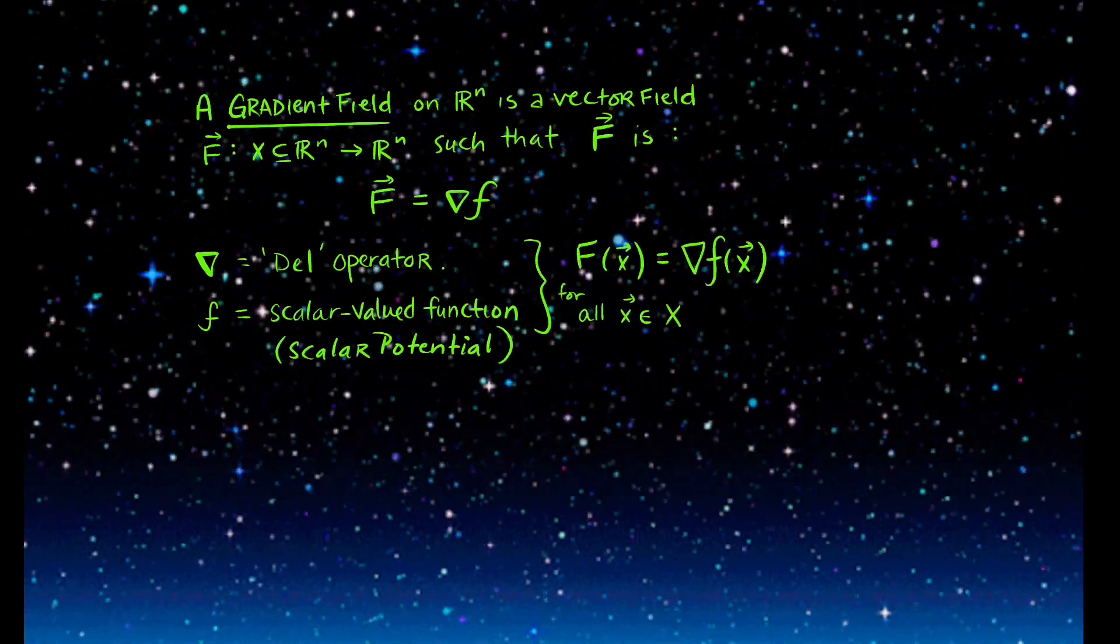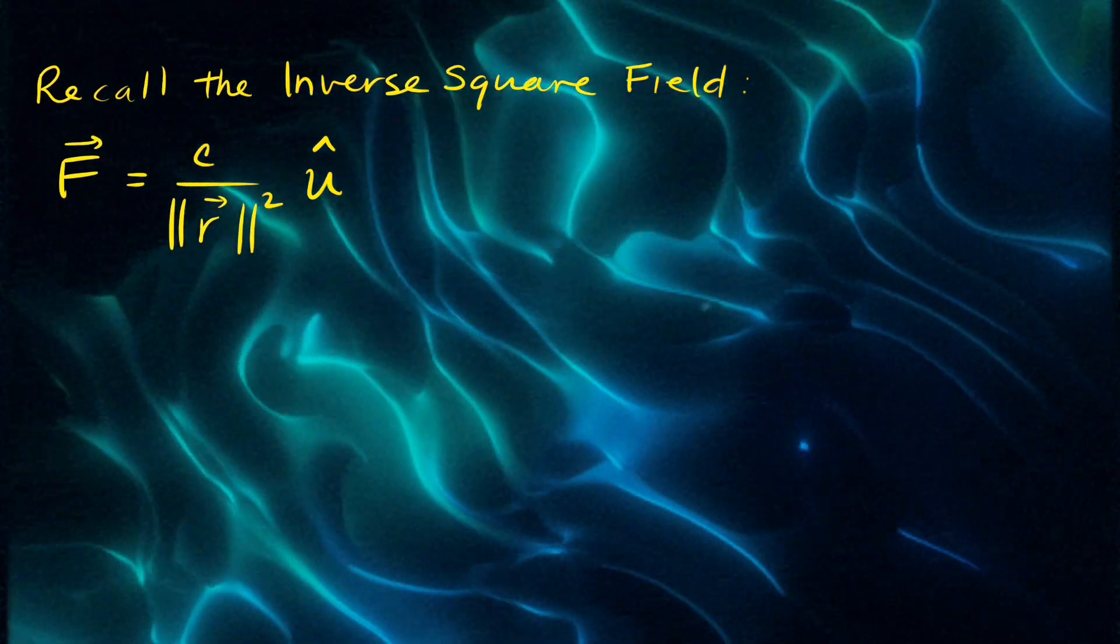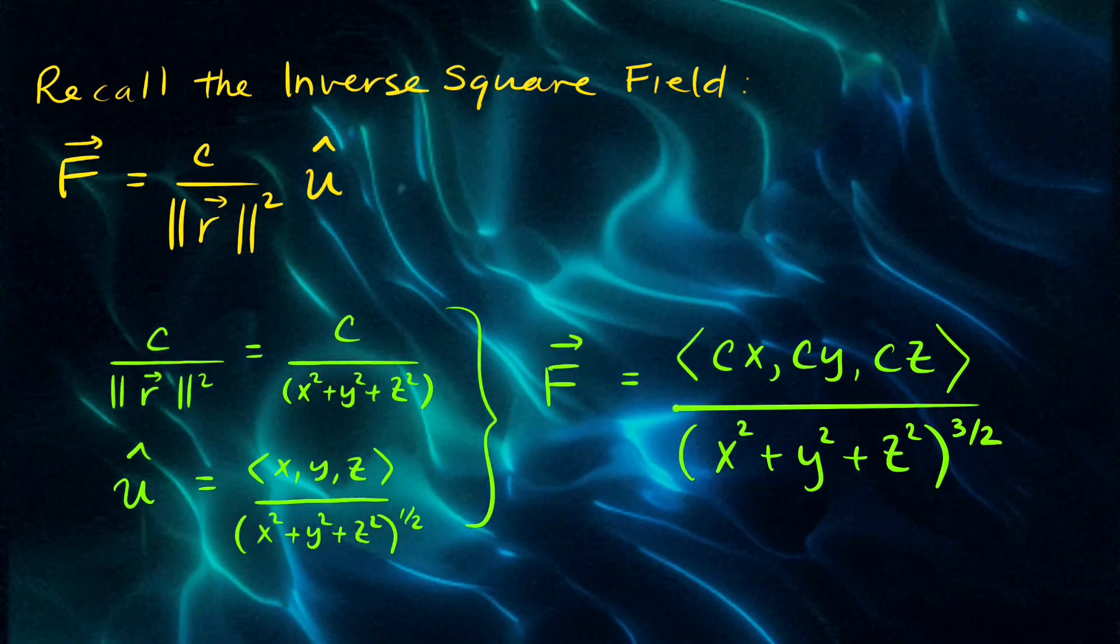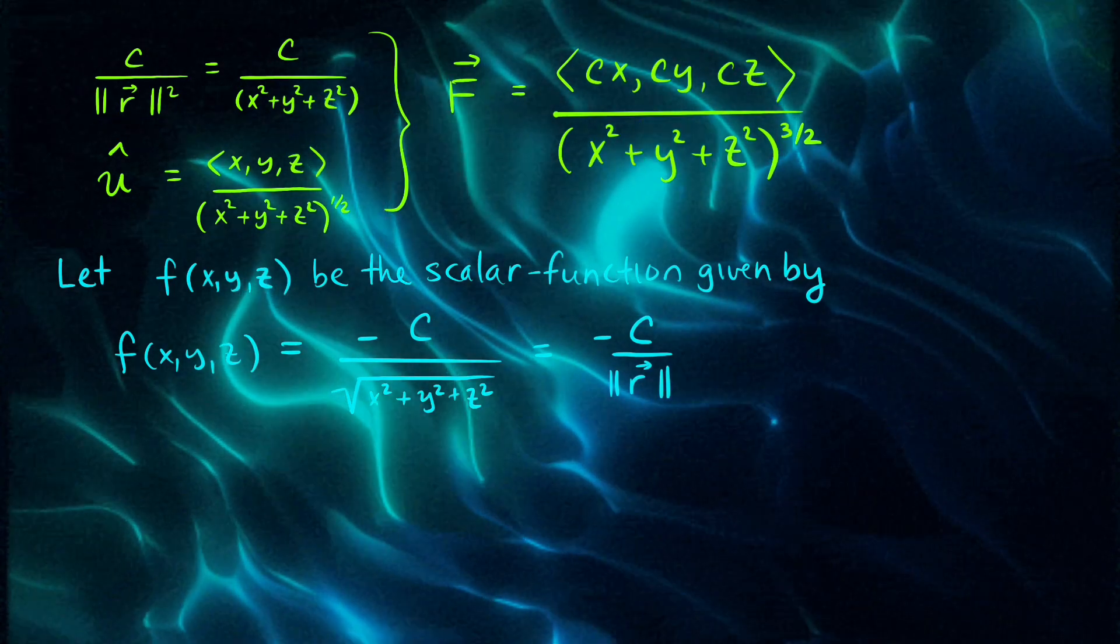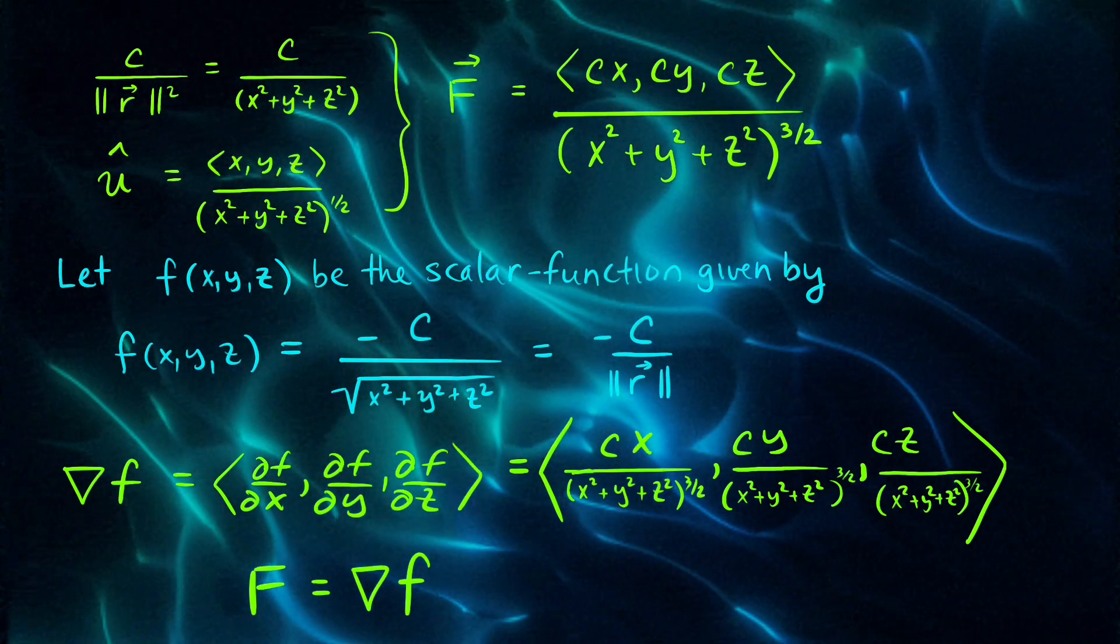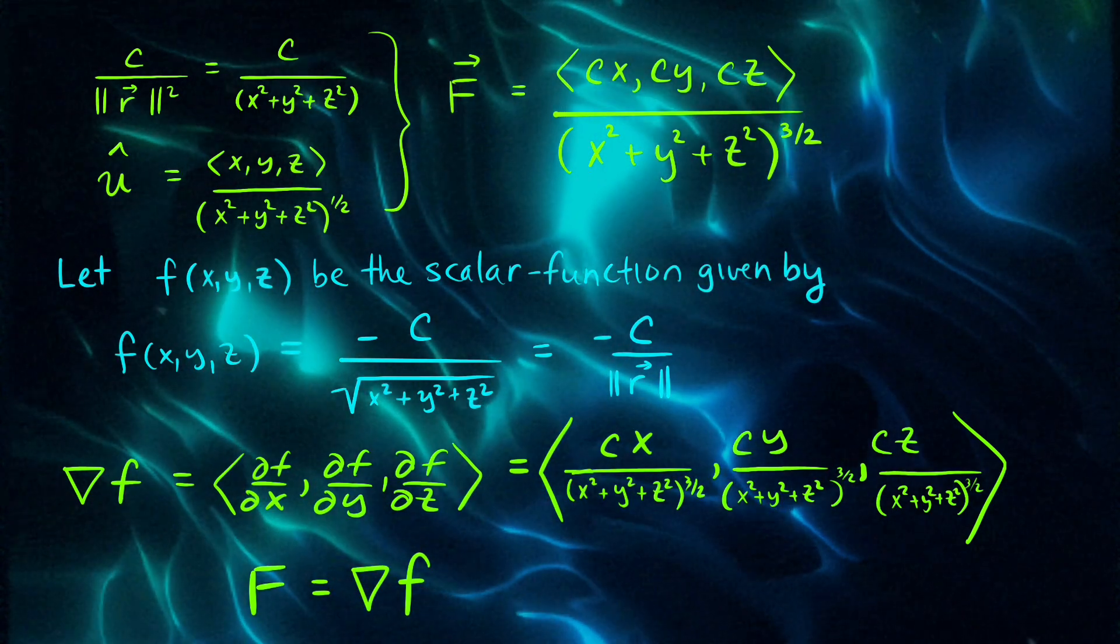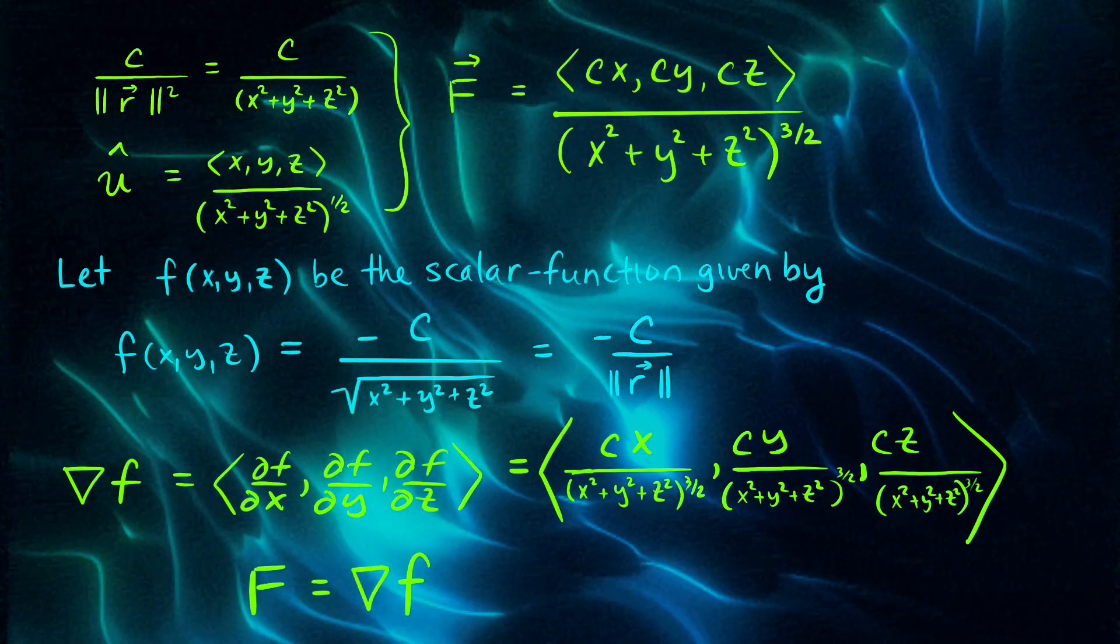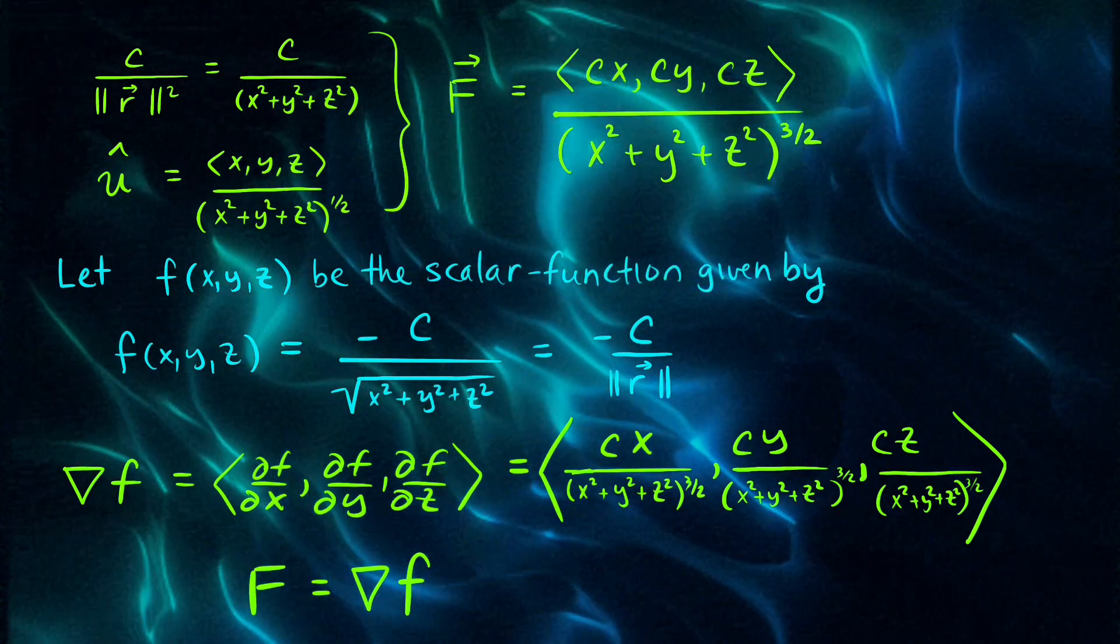If we recall our inverse square field, which is a constant multiple of the unit radial vector, explicitly writing out the expression for the vector components we get F to be the vector (cx, cy, cz) all divided by (x² + y² + z²) to the three-halves power. If we consider the scalar function given by -c over the magnitude of r, we can see that taking its gradient would give us this vector field. So F is a gradient field pointing in the direction of maximum increase.